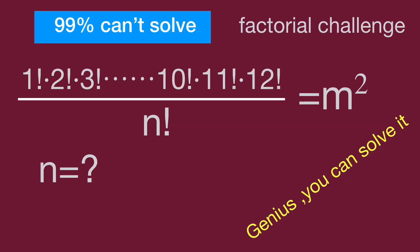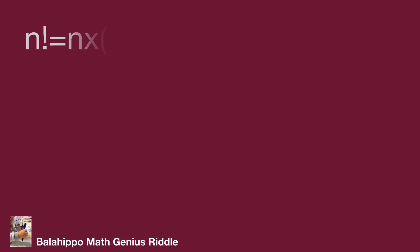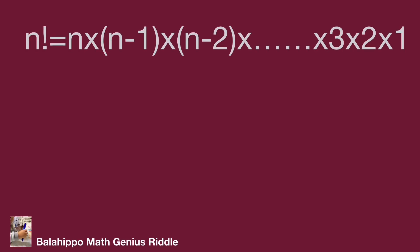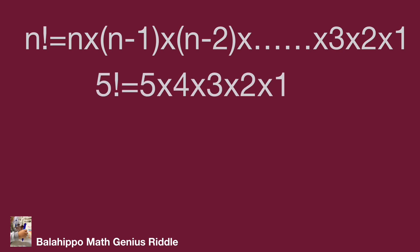Before solving the question, let's recap what is factorial. n factorial equals n times (n minus 1) times (n minus 2), dot dot dot, times 3 times 2 times 1. For example, 5 factorial equals 5 times 4 times 3 times